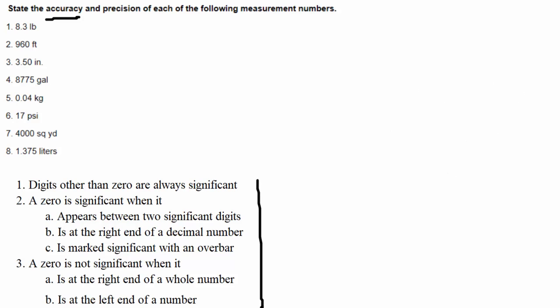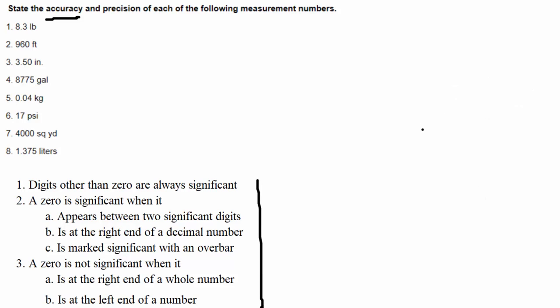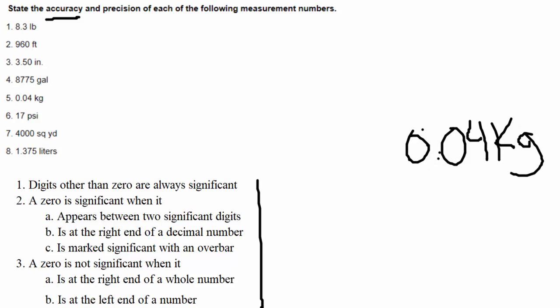Next example: 8775 gallons. I don't see any zeros, so I have four non-zero digits — that means four significant digits. Next example: 0.04 kilograms. I have one non-zero number. The zeros are at the left end of the number, so per our rules they are not significant. Therefore, this example has one significant digit.